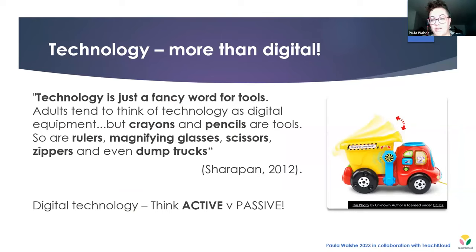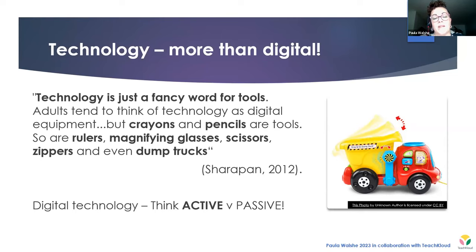Shurpan in 2012 has a really nice quote that sums up what I'm trying to get across: 'Technology is just a fancy word for tools. Adults tend to think of technology as digital equipment, but crayons and pencils are tools. So are rulers, magnifying glasses, scissors, zippers, and even dump trucks.' All those things mentioned in that quote are very clearly not digital — they're not screen-based. These are what I like to refer to as unplugged technologies. If you think back over the history of the world to the stone age, when humans developed the first stone-headed axes and sharpened pieces of slate to make tools — that was technology and a major technological advancement. We need to think beyond the last 20 years and think of technology in the broadest possible sense of the word.